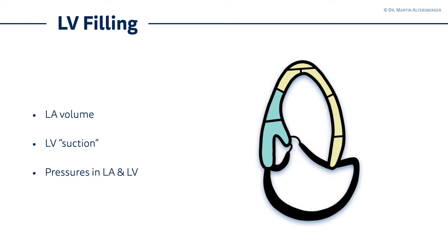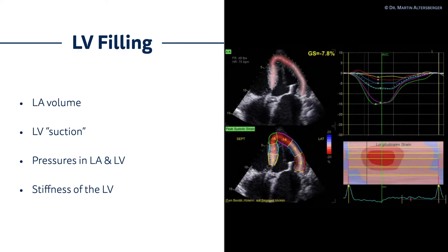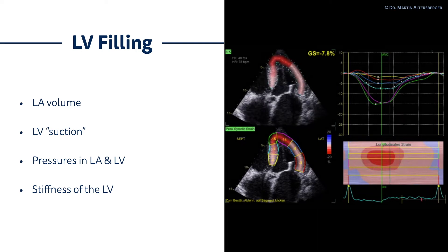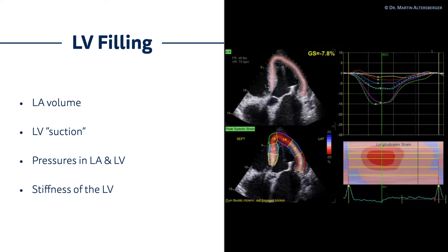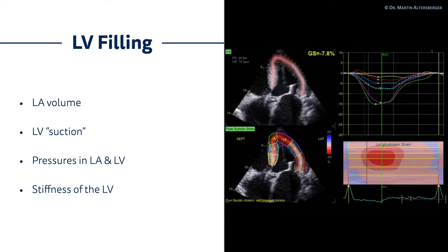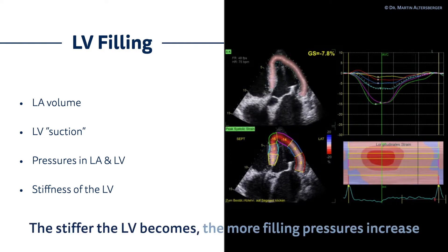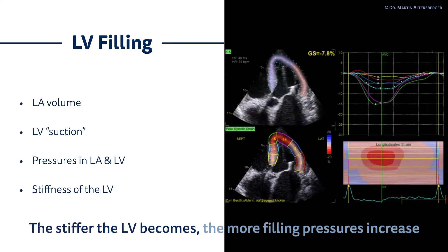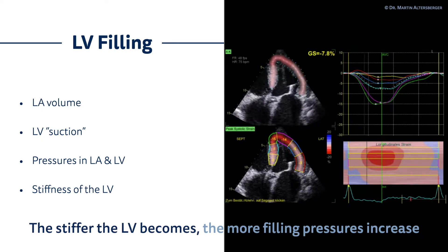Last but not least, another very important factor — you can see on the right hand side the strain image of a hypertrophied heart or a thickened myocardium — is the stiffness of the left ventricle. The stiffer the left ventricle becomes, the more increased are the filling pressures.